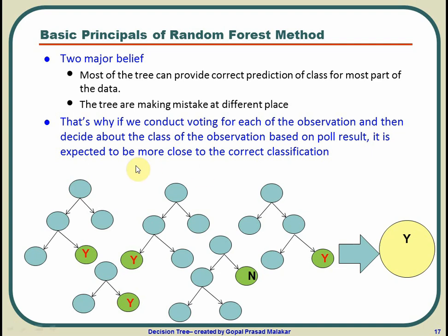So the belief is that by using many decision trees which are random in terms of data, independent observations that have been used for developing the decision tree as well as random selection of variables, you are able to use it better to provide a better classification of the dependent variable, better prediction of the dependent variable. And that's how you use the random forest method.